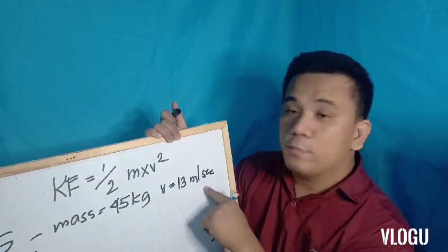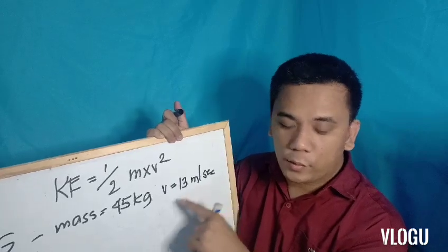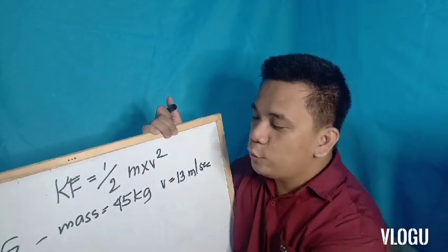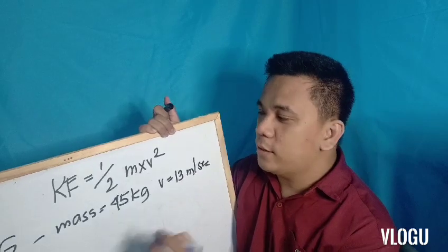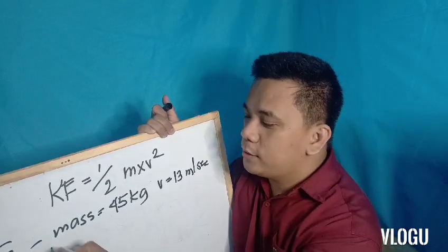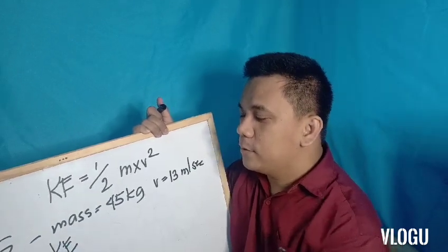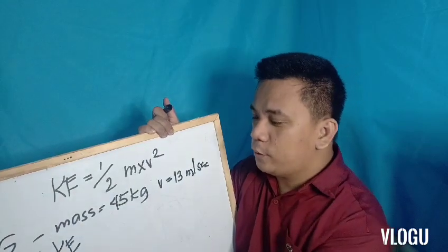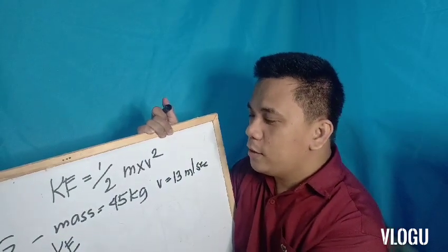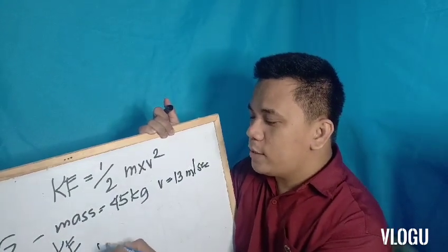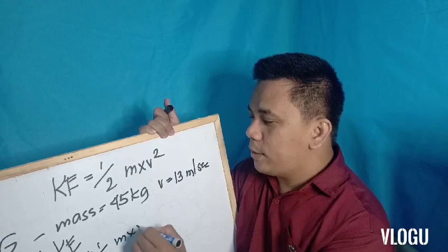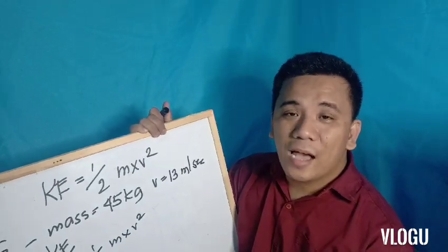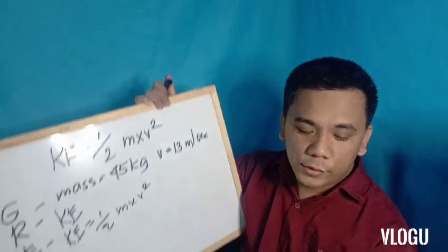The required value is KE (kinetic energy). The equation is: KE is equal to one-half of mass multiplied by velocity squared.